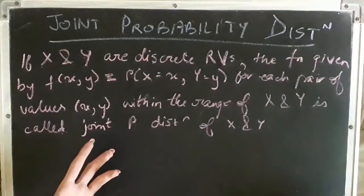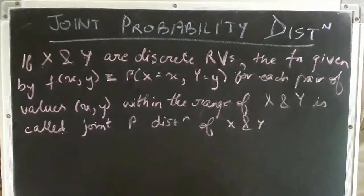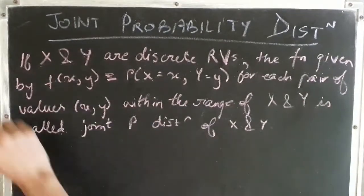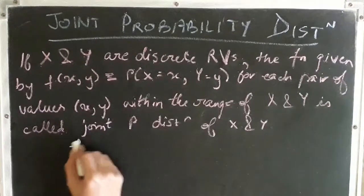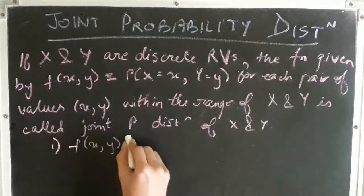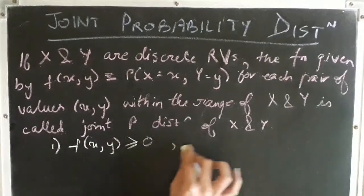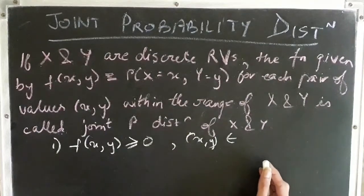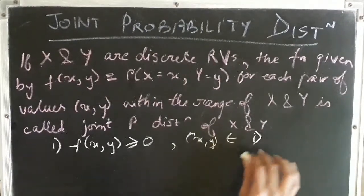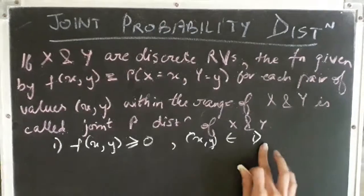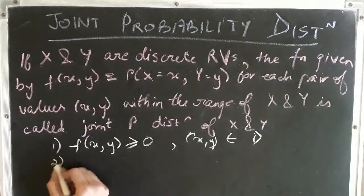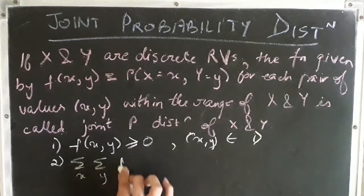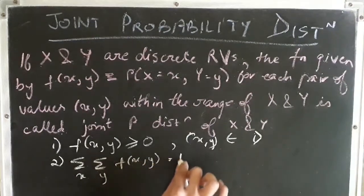Just like the PDF of discrete and continuous random variables had some properties, the joint probability distribution of X and Y also satisfies certain properties. The first one is that f(x, y) is greater than or equal to 0 for each x, y that belongs to the domain of capital X and Y. The second property is that the double summation over x and over y of f(x, y) equals 1.